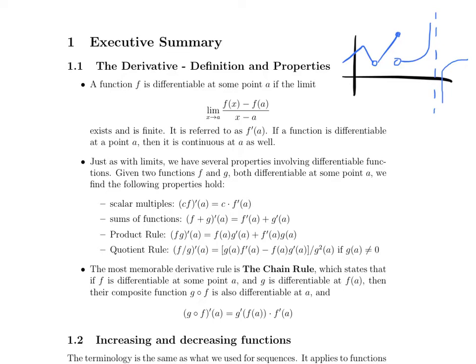Just as with limits, because this particular idea of the derivative is itself a limit, it has a limit definition. And so a lot of the properties that hold for limits hold for derivatives as well. So the scalar multiple of some function's derivative is going to be the scalar multiple of that function's derivative. The sum of the derivatives is the derivative of the sum.